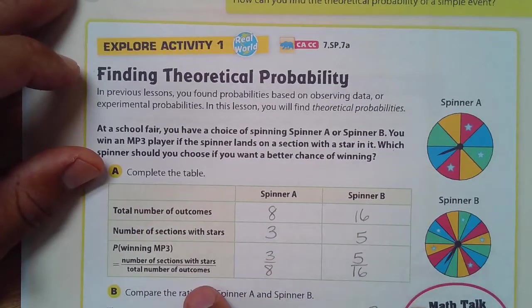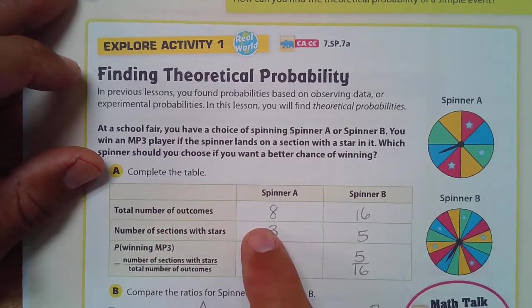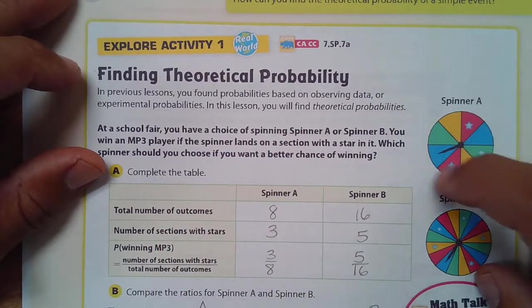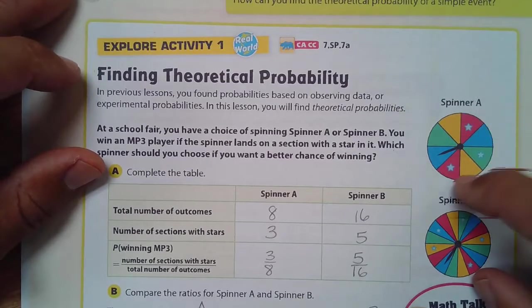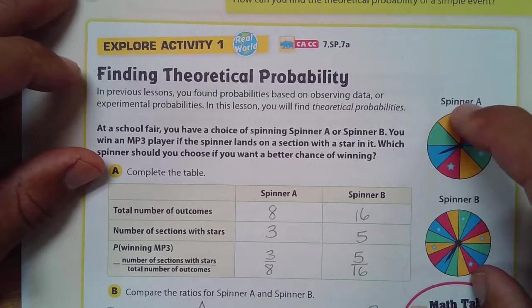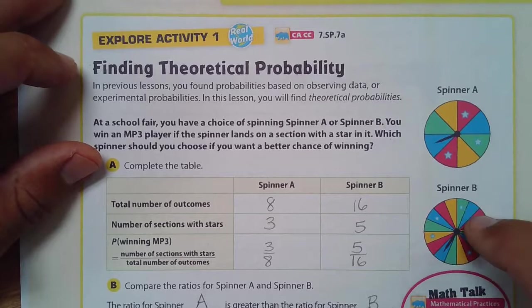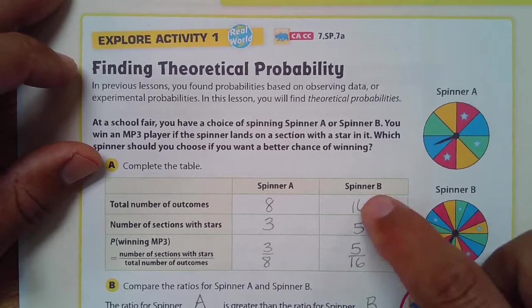We're going to complete the table here. Total number of outcomes. There are eight different outcomes in spinner A: 1, 2, 3, 4, 5, 6, 7, 8. And in spinner B, there's twice as many. There's 16. And so I've recorded 16.